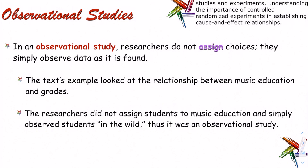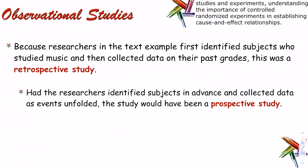In an observational study, researchers do not assign choices — they simply observe data as it's found. This example looked at the relationship between music education and grades. The researchers did not assign students to music education; they simply observed students in the wild. Thus, this was an observational study. Because researchers first identified subjects who studied music and then collected data on their past grades, this is called a retrospective study — looking in the past. Had the researchers identified subjects in advance and collected data as events unfolded, that would be called a prospective study — one that's ongoing currently.